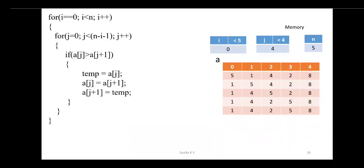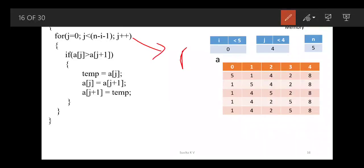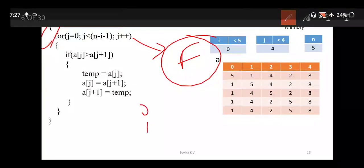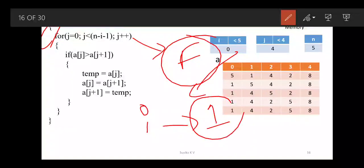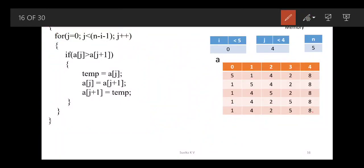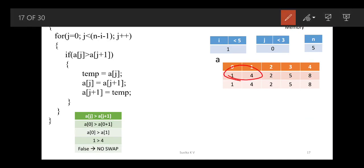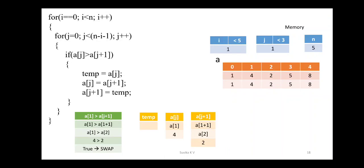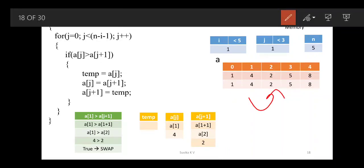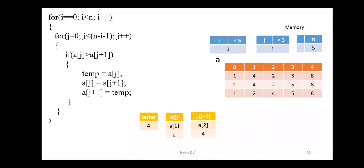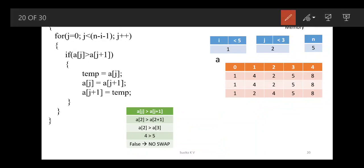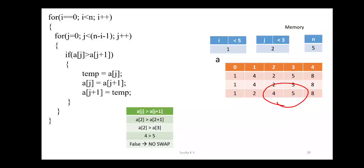j becomes 4, which is not less than 4, so the j loop ends and it goes back to the i loop. i increments from 0 to 1 and j starts again from 0. We compare 1 and 4: is 1 greater than 4? No — false, no swap. j becomes 1: is 4 greater than 2? Yes — swap. j becomes 2: is 2 less than 3? Yes. Is 4 greater than 5? No — false, no swap. The elements are already in perfect order.